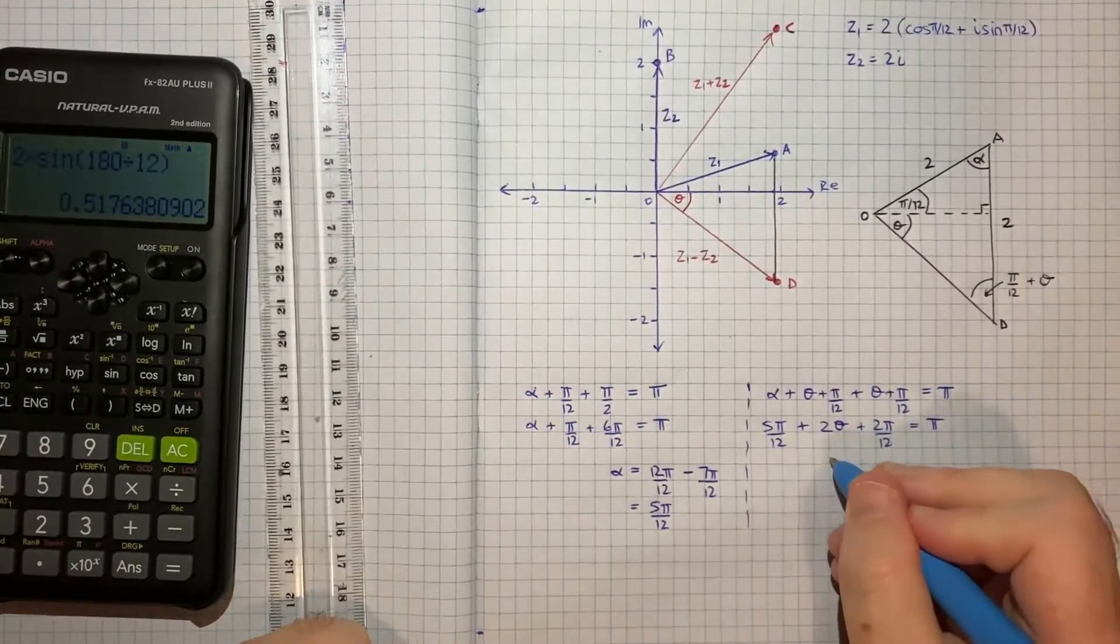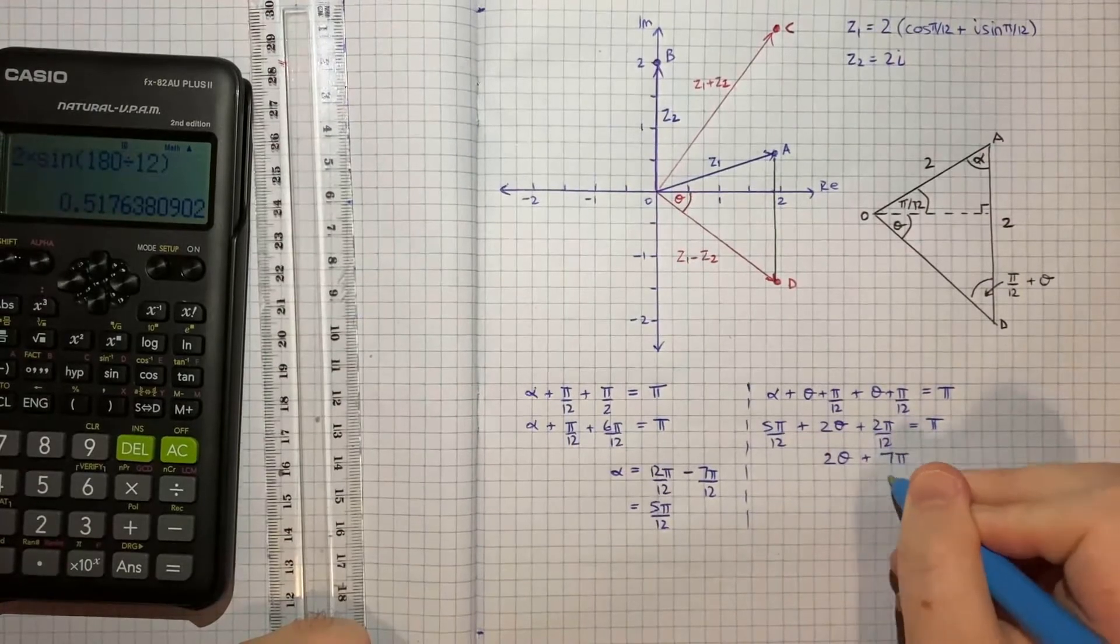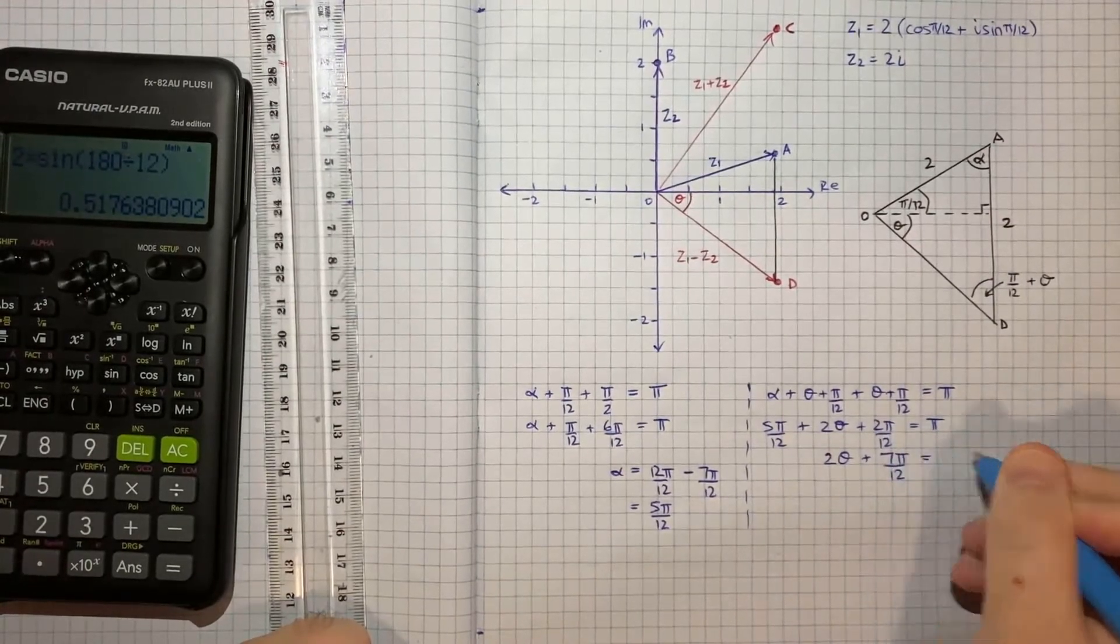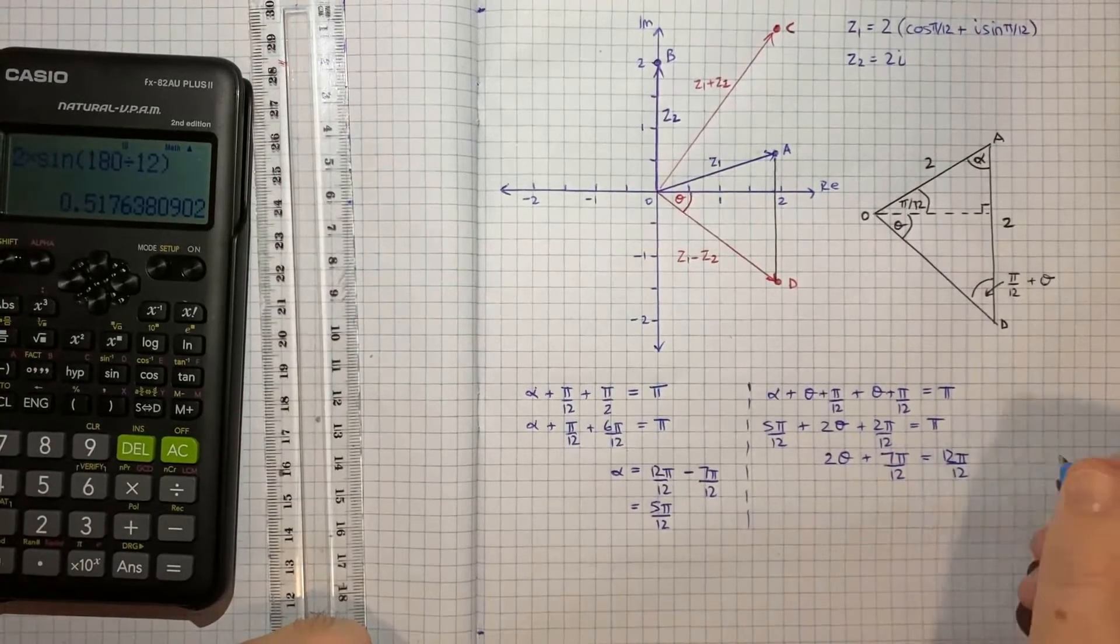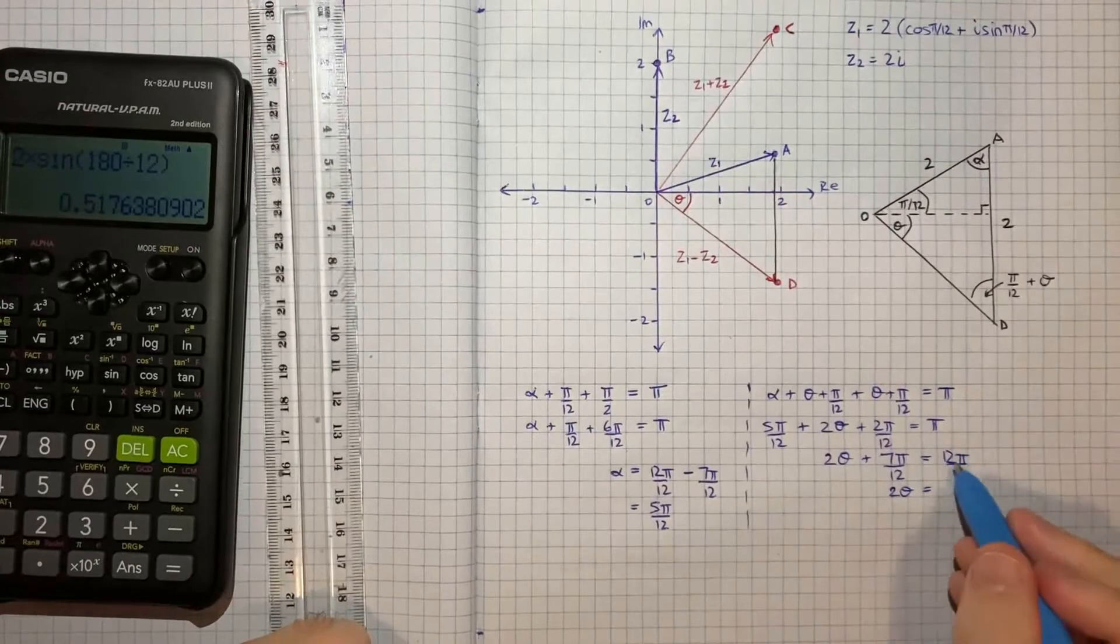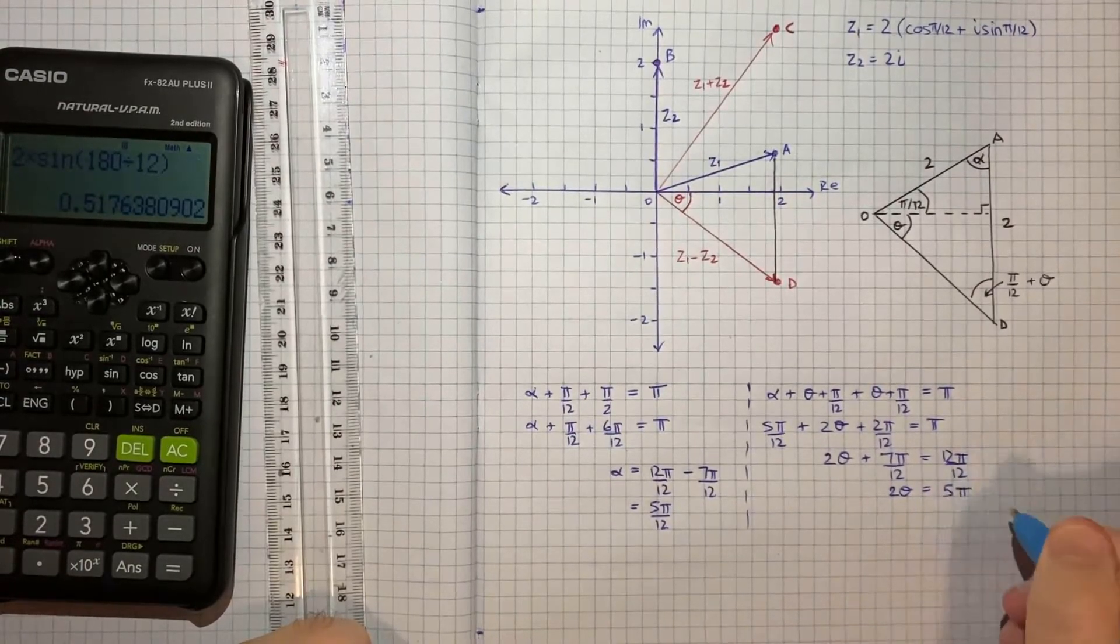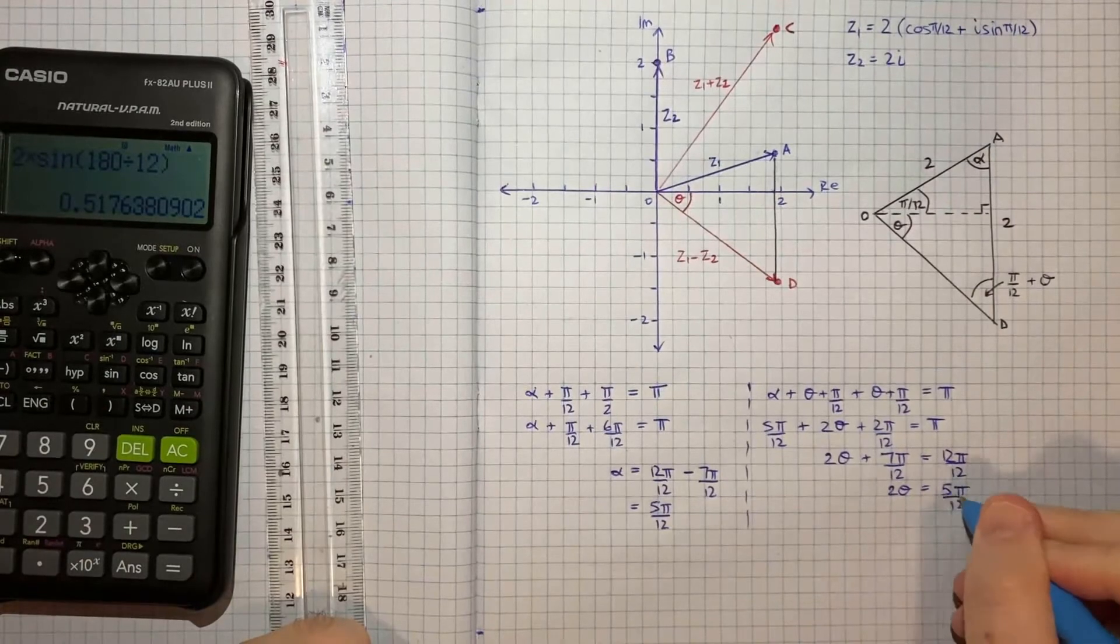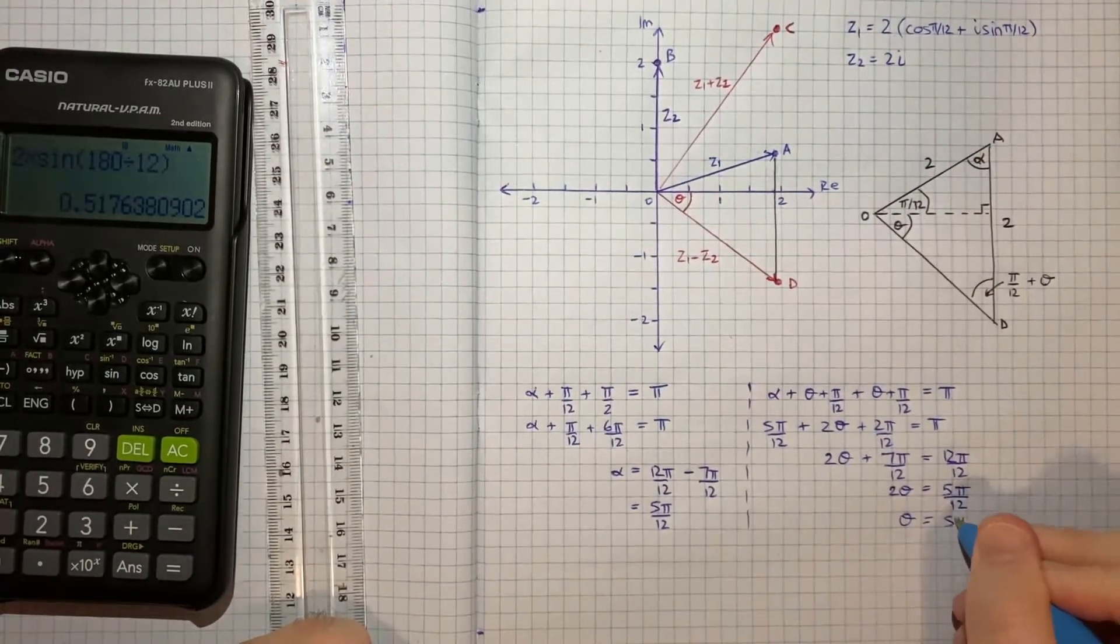So that means 2 theta plus 7 pi on 12 equals, I'll call this 12 pi on 12. So 2 theta will equal 12 minus 7 is 5 pi on 12, so theta will equal 5 pi on 24.